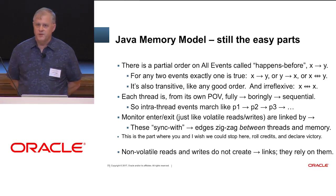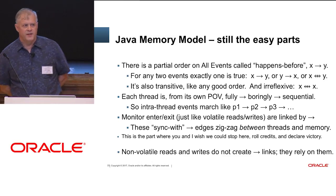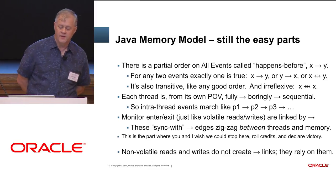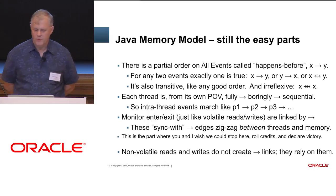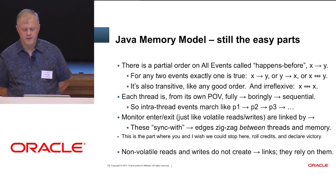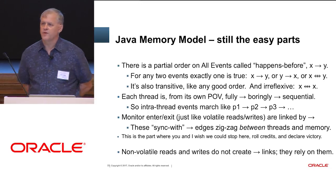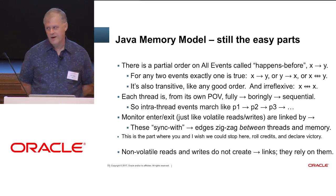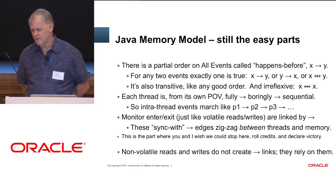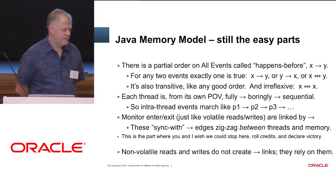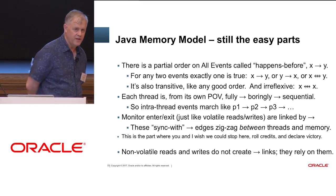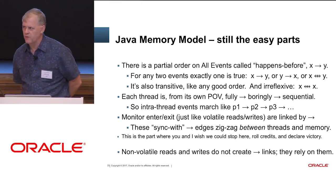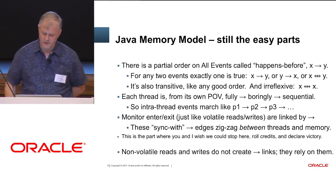Normal reads and writes — which are the default in Java — do not create these happens-before links. You think they do; I think they do on a day when I can conveniently forget the Java memory model. But actually, they don't. They don't create these causal links. They rely on them.